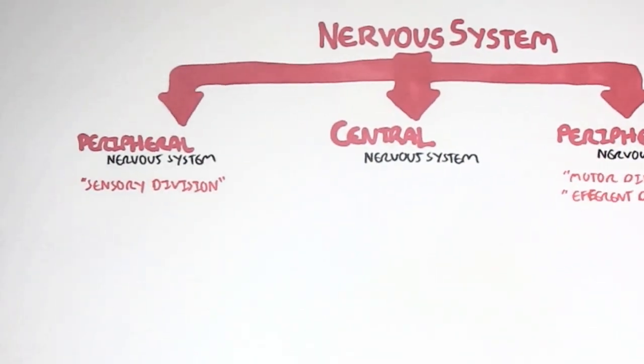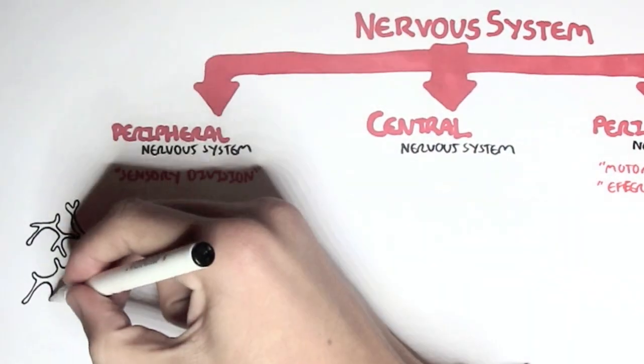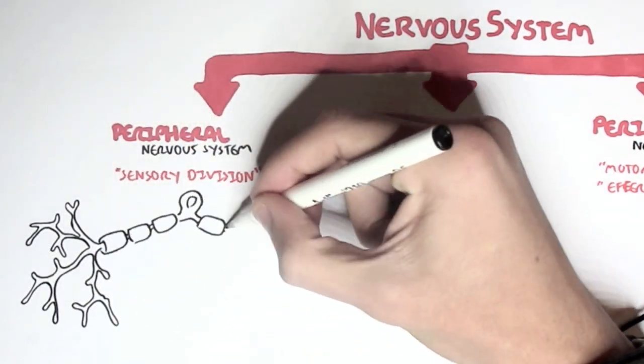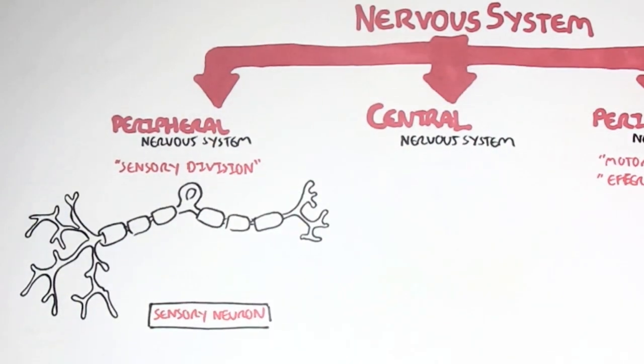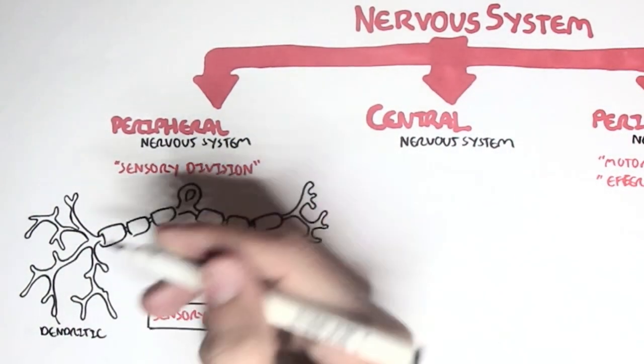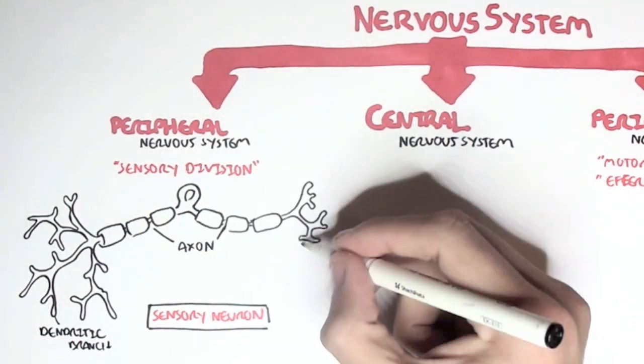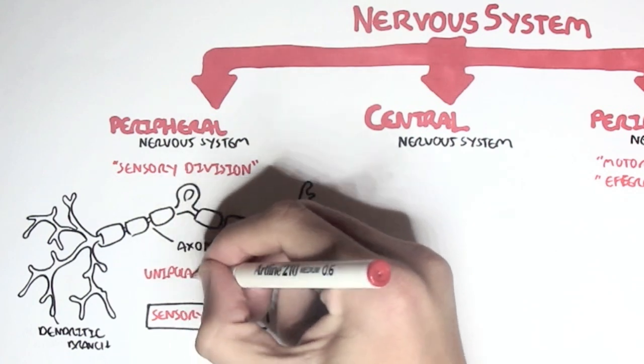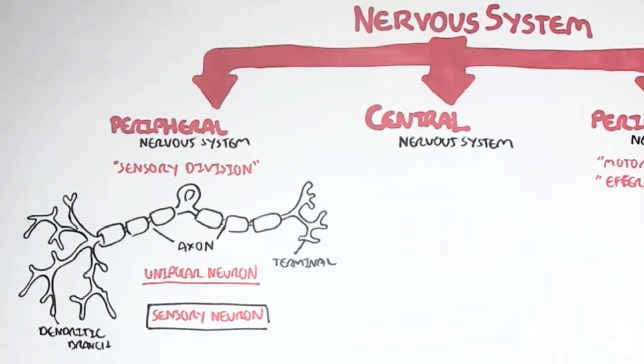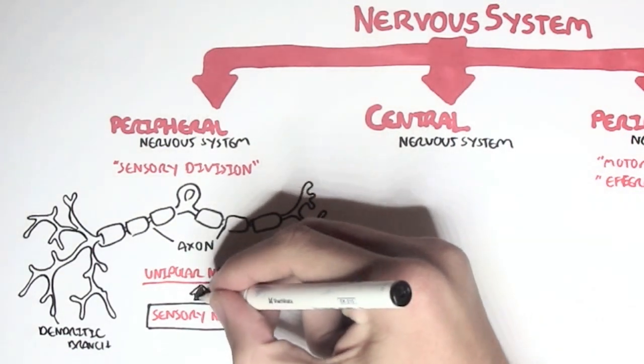The sensory division of the peripheral nervous system consists of sensory neurons that look something like this. It has dendritic branches here, the axon on either side of the soma, the cell body, and then the synaptic terminal here. This type of neuron is categorized under the structure of a unipolar neuron.